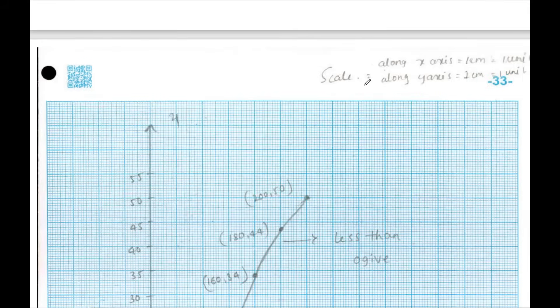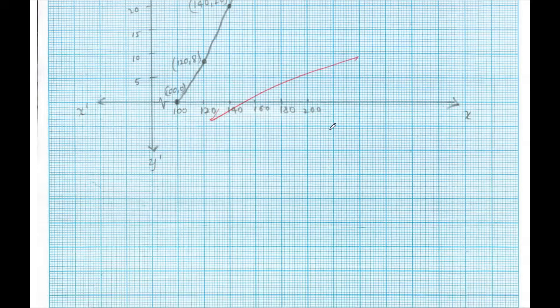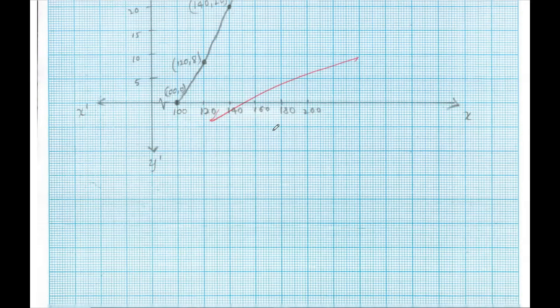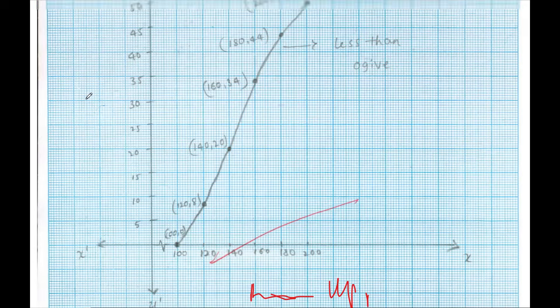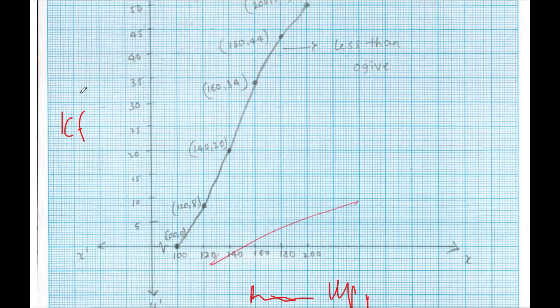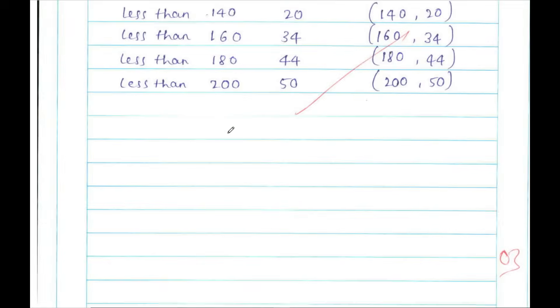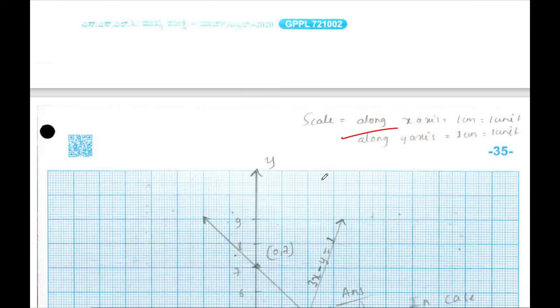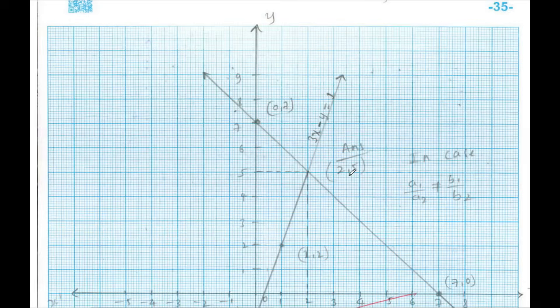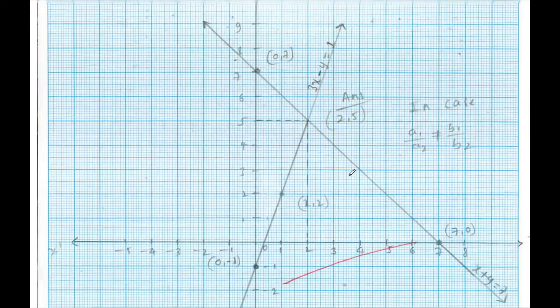For graph, scale has been written here. The x-axis naming is not done - that is upper limit. Here it is cumulative frequency. So for graph, scale should be written and the line, the points, everything is written with the answers.